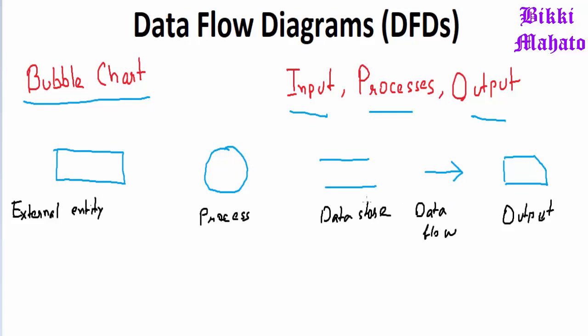Next we have data store. So this data store is represented by two parallel lines, and it represents a logical file. That is the data store can represent either a data structure or a physical file on disk. So either it can represent data structure or physical file, data structure or physical file. So this is just a process and this one was like properties.